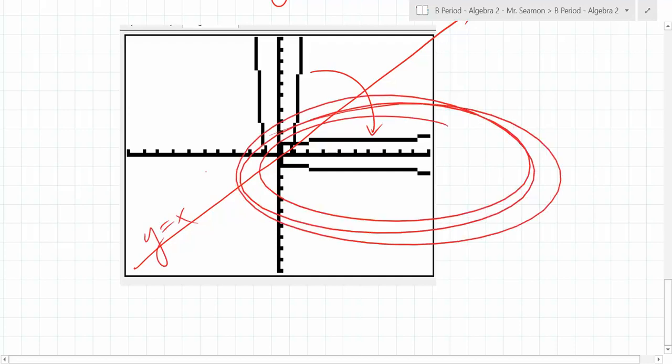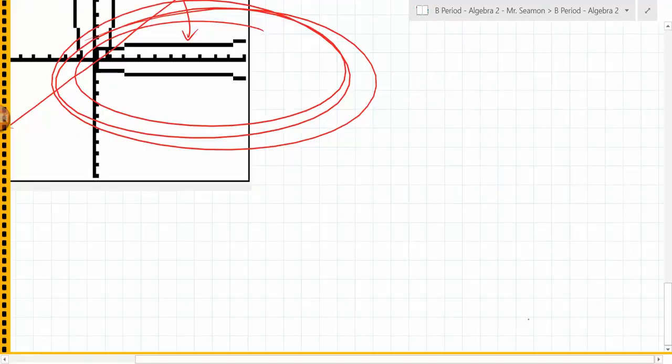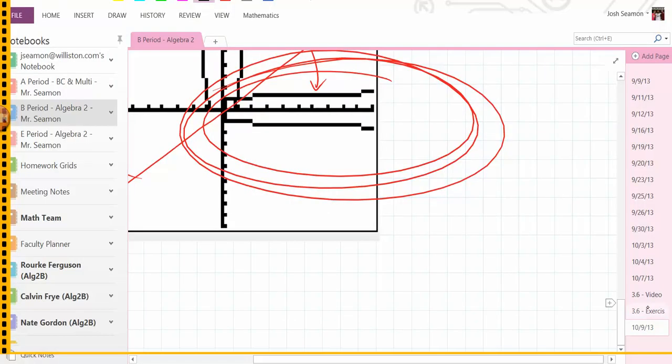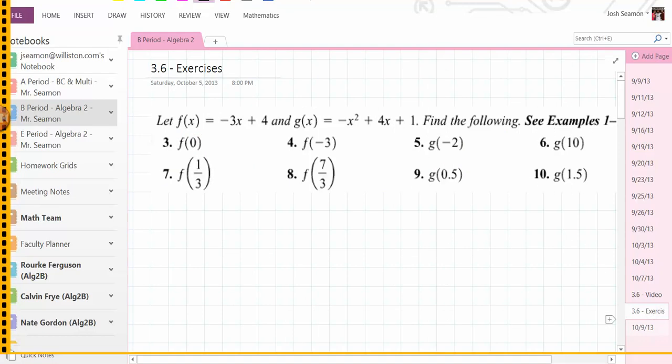But anyway, this right here, is this a function? No. Because it does not pass the... Correct. Okay. Put everything away except the pencil, please. So that's what you're looking for, kids. You're looking for 3.6 exercises. This page right here. So that's what I'd like you to find.